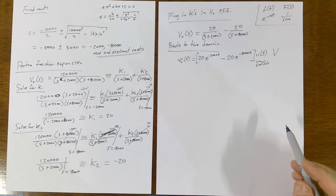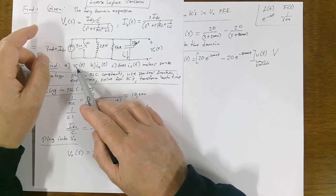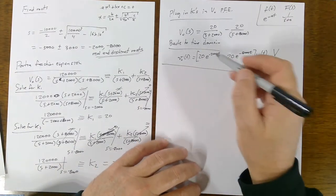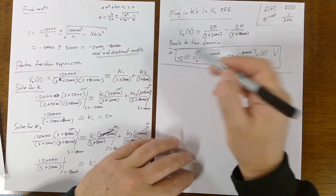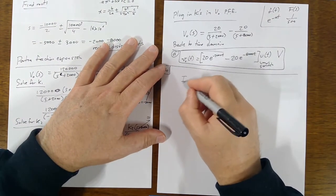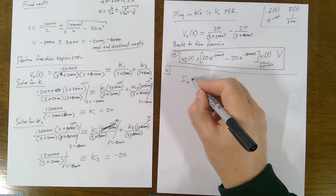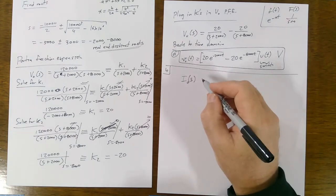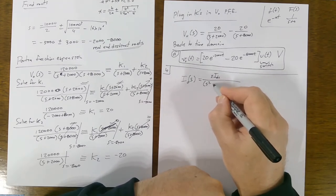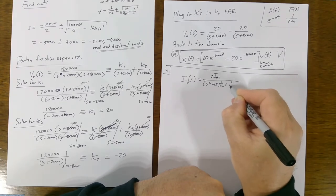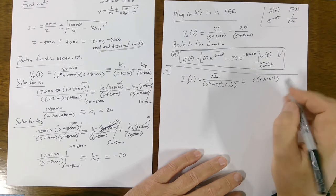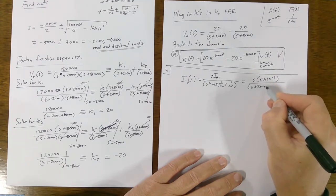Now we need to find I0(t). We're given the I0(S) expression from the previous problem: I0(S) = S·IDC / (S² + S·(1/RC) + 1/LC), which is S × 3×10⁻³ over the same factored denominator (S + 2,000)(S + 8,000).